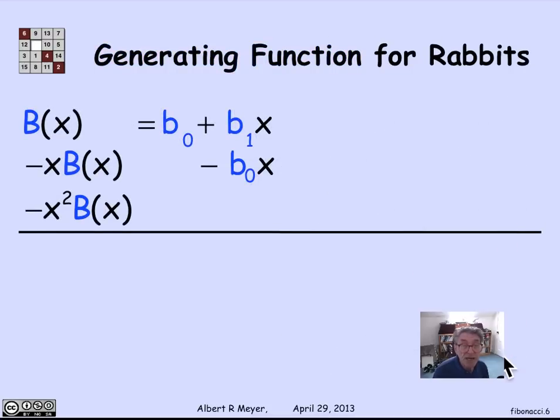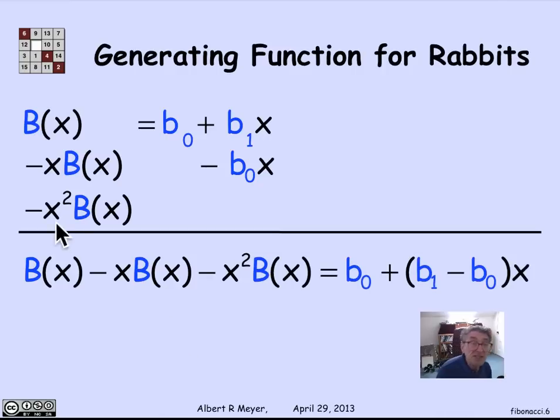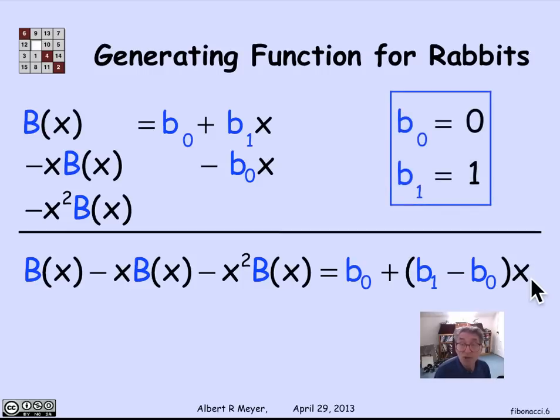So let's get rid of the stuff that we don't care about. And remember that we have this solution then that B of x minus xB of x minus x squared B of x is equal to the right hand side B0 plus B1 minus B0 times x. But we know what B0 and B1 are, so we can simplify. This just simplifies to 1.